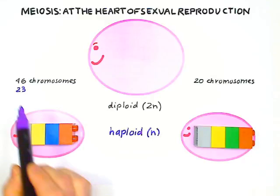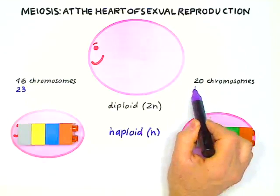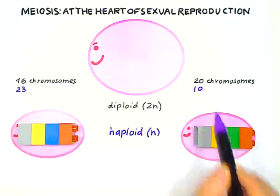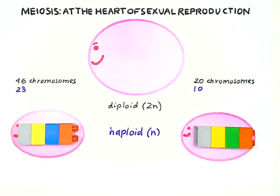In corn, reproductive cells, also called sperm or eggs, contain 10 chromosomes. 1n is 10. So, meiosis divides the number of chromosomes in two.